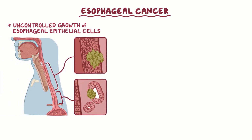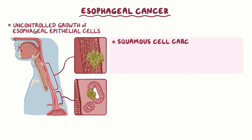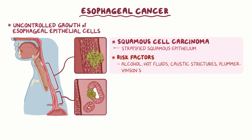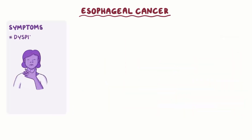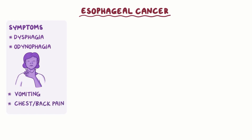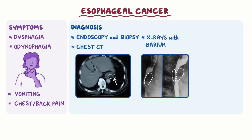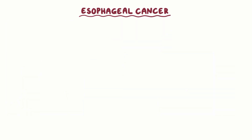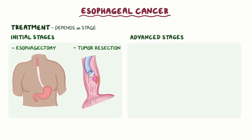As a quick recap: esophageal cancer is the uncontrolled growth of esophageal epithelial cells. Risk factors for both types include smoking, age over 60 years, and achalasia. Squamous cell carcinoma arises from stratified squamous epithelium; specific risk factors include alcohol, hot fluids, caustic strictures, Plummer-Vincent syndrome, and palmoplantar keratoderma. Adenocarcinoma arises from columnar epithelium; Barrett's esophagus and chronic GERD are the most important risk factors. Symptoms include dysphagia, odynophagia, vomiting, and chest or back pain. Diagnosis is made with endoscopy and biopsy. Chest CT, x-rays with barium contrast of the upper GI tract, and PET are used for further evaluation. Treatment depends on the stage: for initial stages, esophagectomy and tumor resection are sufficient; for more advanced stages, chemoradiotherapy combined with surgery is used.